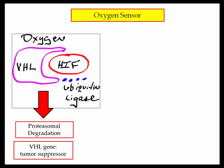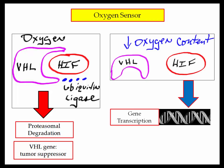To discuss VHL, you need to understand the oxygen sensor. Components include HIF — hypoxia-inducible factor. Under normal circumstances in the presence of oxygen, HIF is bound to the von Hippel-Lindau gene, VHL, which in the presence of ubiquitin ligase directs its degradation. In the presence of normoxia — normal oxygen levels — VHL directs protein degradation, and in this manner it is considered a suppressor gene. In the setting of decreased oxygen content, either from anemia or hypoxia, the VHL gene dissociates from HIF. HIF then stimulates gene expression, producing erythropoietin.